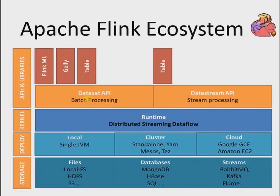The Apache Flink ecosystem is divided into four main parts. The first one is Storage, the next is Deploy, the third is Kernel, and the fourth is API and Libraries. I will discuss all of these ecosystem components one by one so you can easily understand and handle them efficiently.